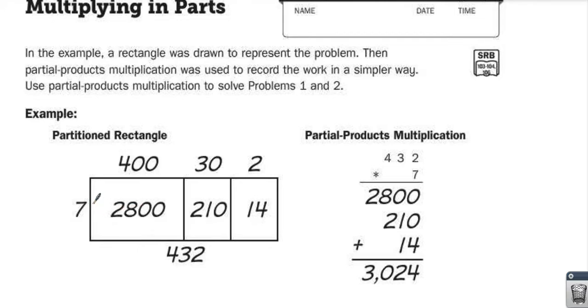So you can see here we did 7 times 432. Start with 7 times 400, right from here to here, then 7 times 30, here to here, 7 times 2, here to here, and you get 2,800, 210, 14, and you add them together.